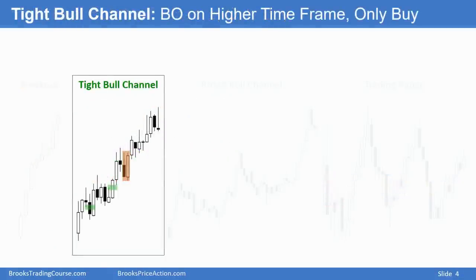A tight bull channel is a bull channel, and on a higher timeframe chart it's a breakout. So if this is a one-hour chart, every bar one hour, if you look at a daily or weekly chart it may simply be two or three consecutive bull trend bars. What distinguishes it from a breakout is that on this timeframe there are pullbacks. The low of this bar is below the low of that bar, and there are two, three, four, sometimes many pullbacks.